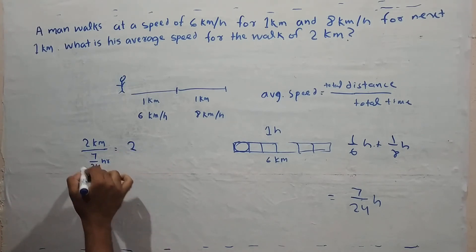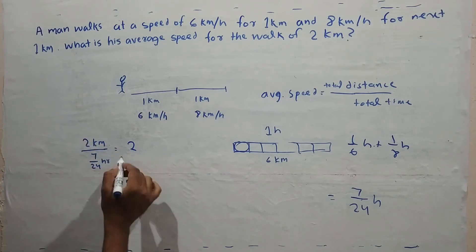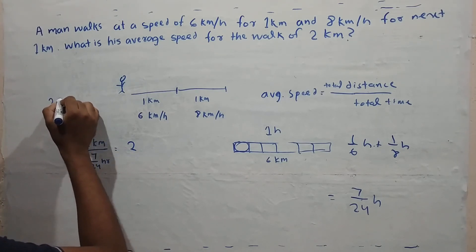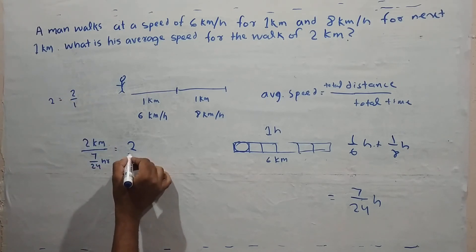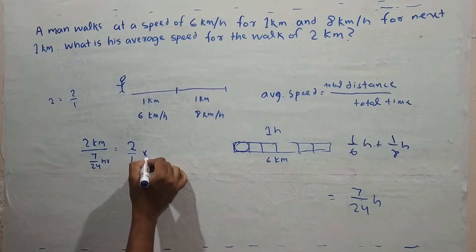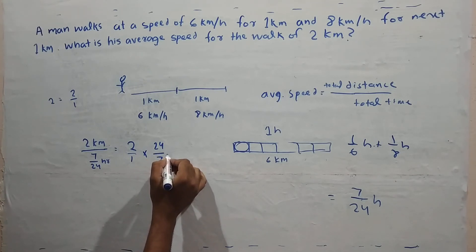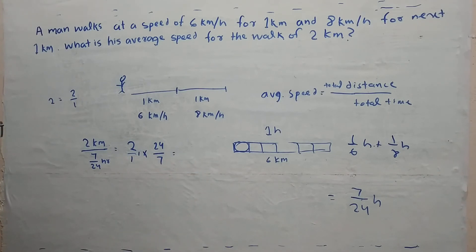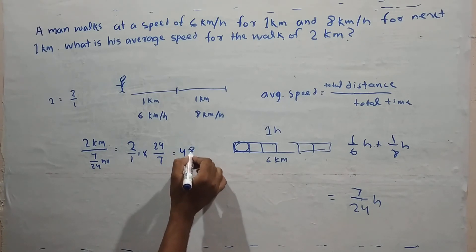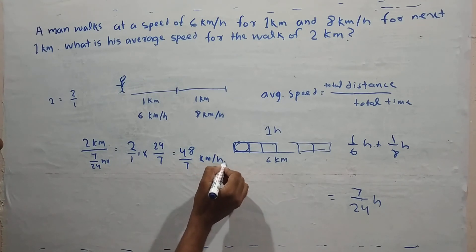2 divided by 7/24. We write 2 as 2/1. When dividing fractions, we multiply 2/1 by 24/7, which equals 48/7 km per hour. This is the average speed.